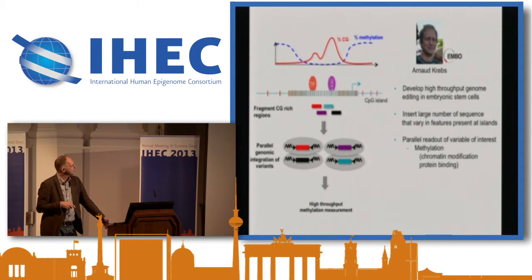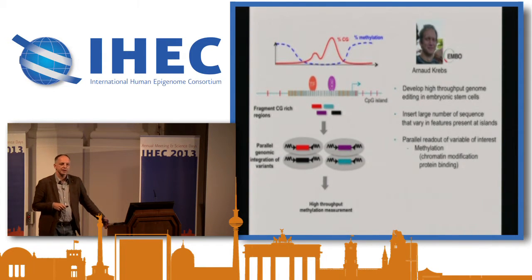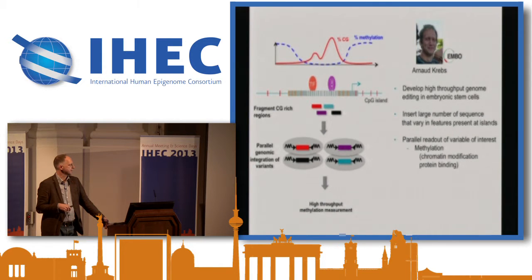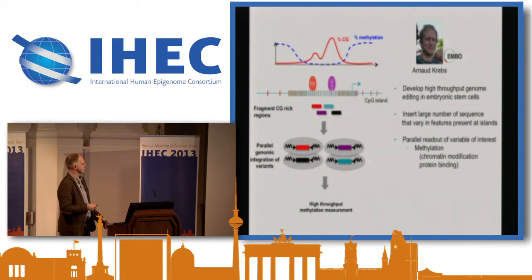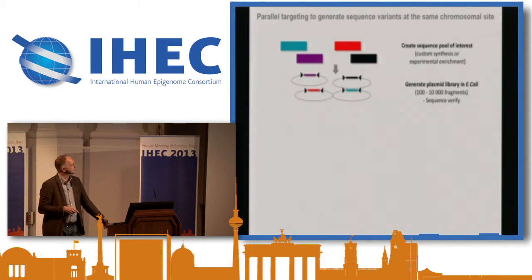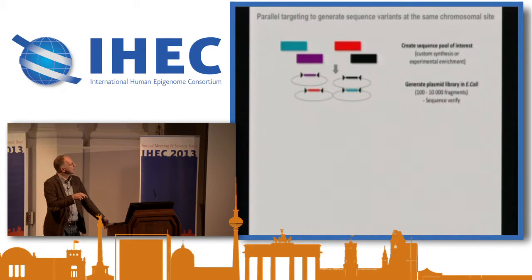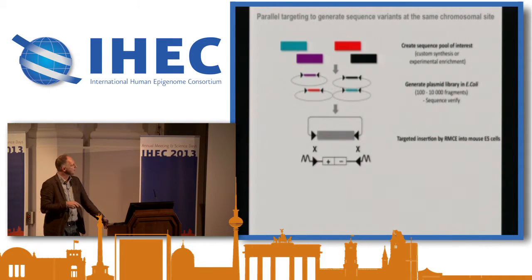Arnold Krebs, a postdoc fellow in the lab, took this on and said: can we try to target many sequences into the same genomic site so we could look at large libraries that really explore the sequence space much more comprehensively, and learn about what are the rules that govern an unmethylated state within CpG-rich sequences? That would require being able to look into libraries of cells that differ by which sequence they have, and the ability to look at these in parallel. What Arnold came up with is the following strategy: create a sequence pool of interest — this can be custom synthesis or experimental enrichment of certain fragments — clone this into a library that contains two inverted lox sites.